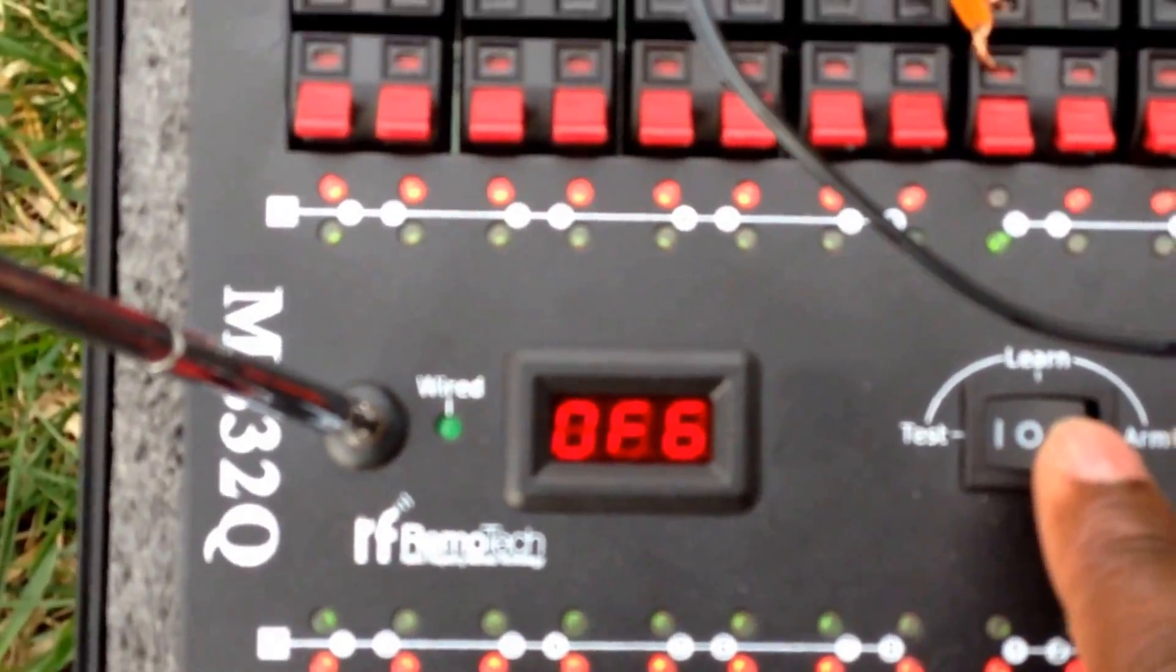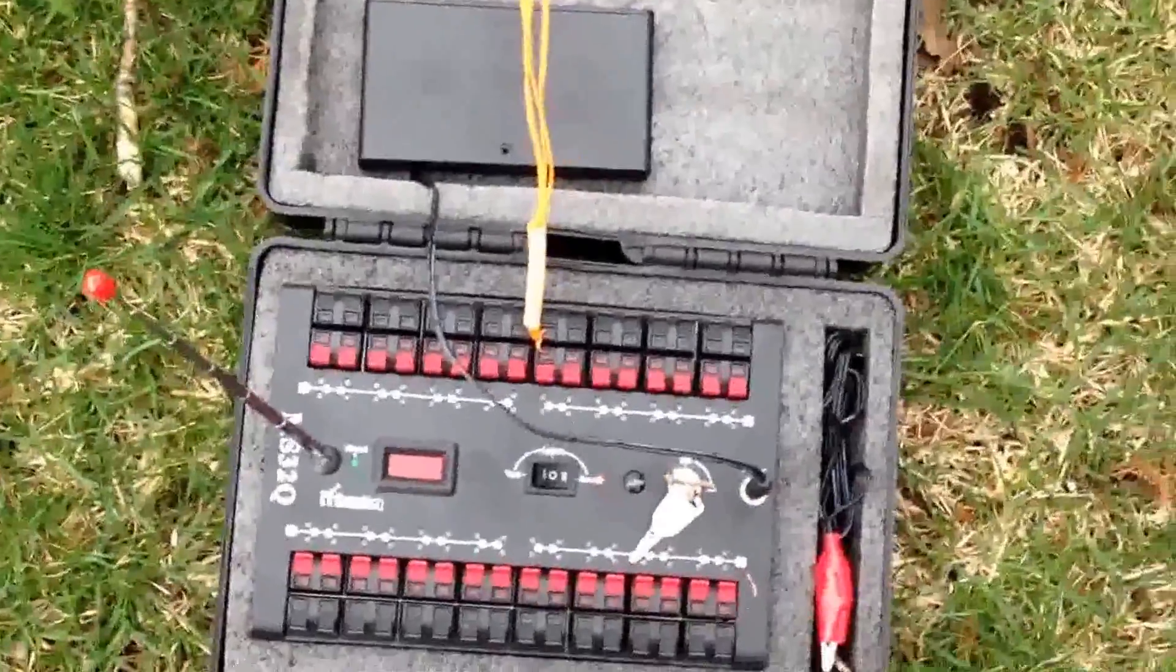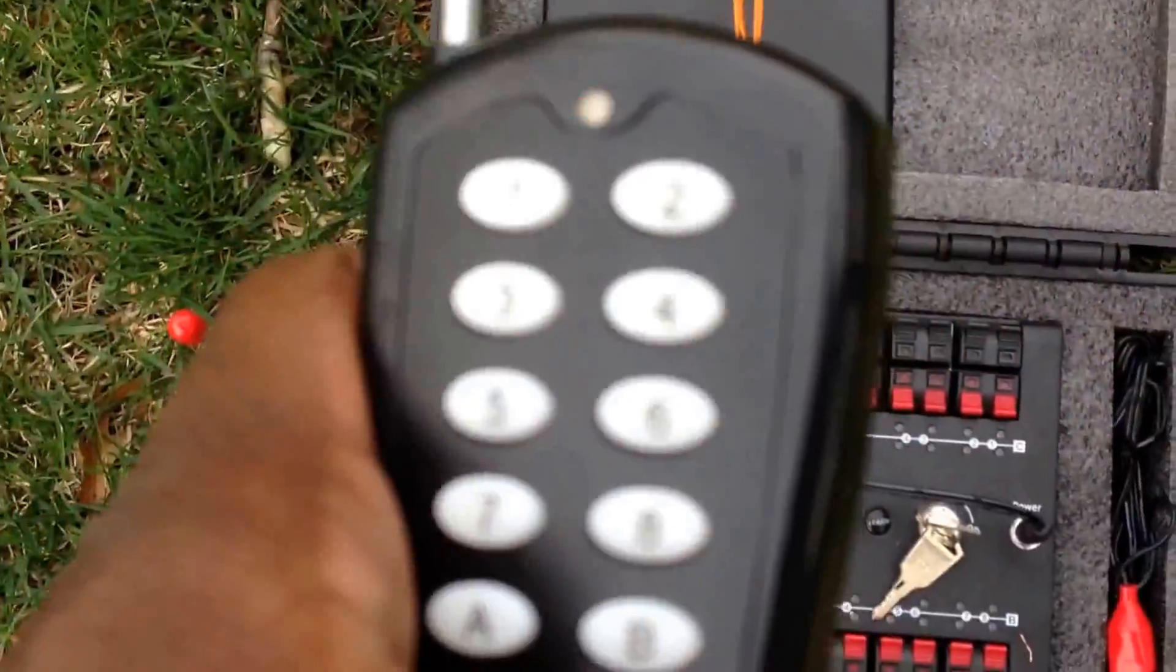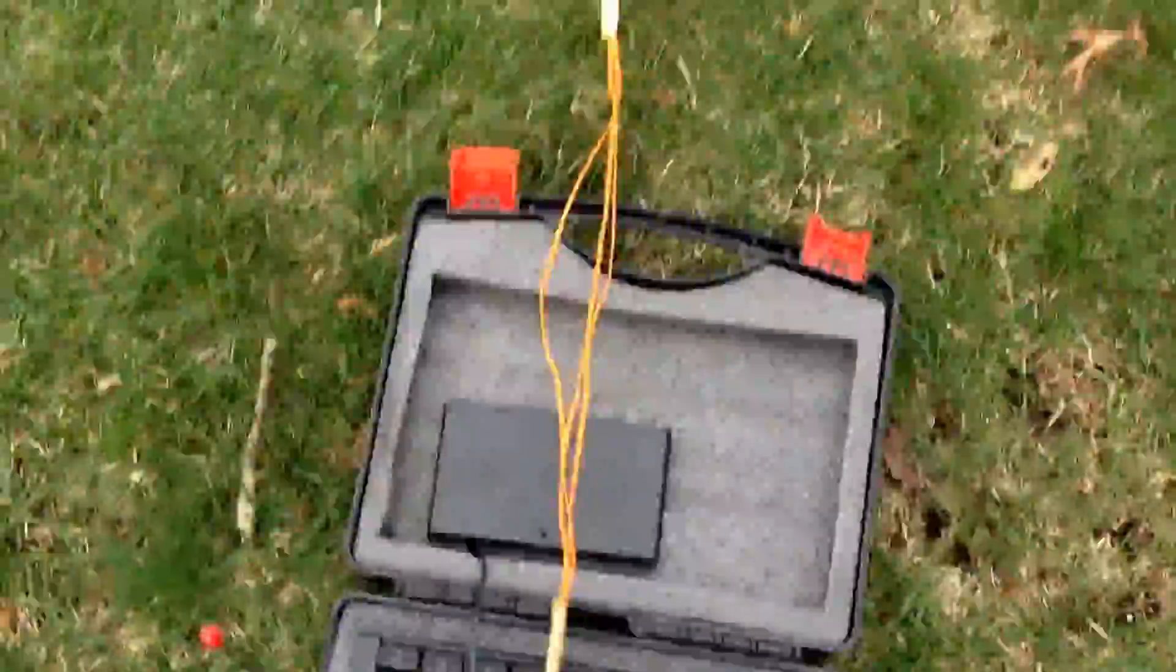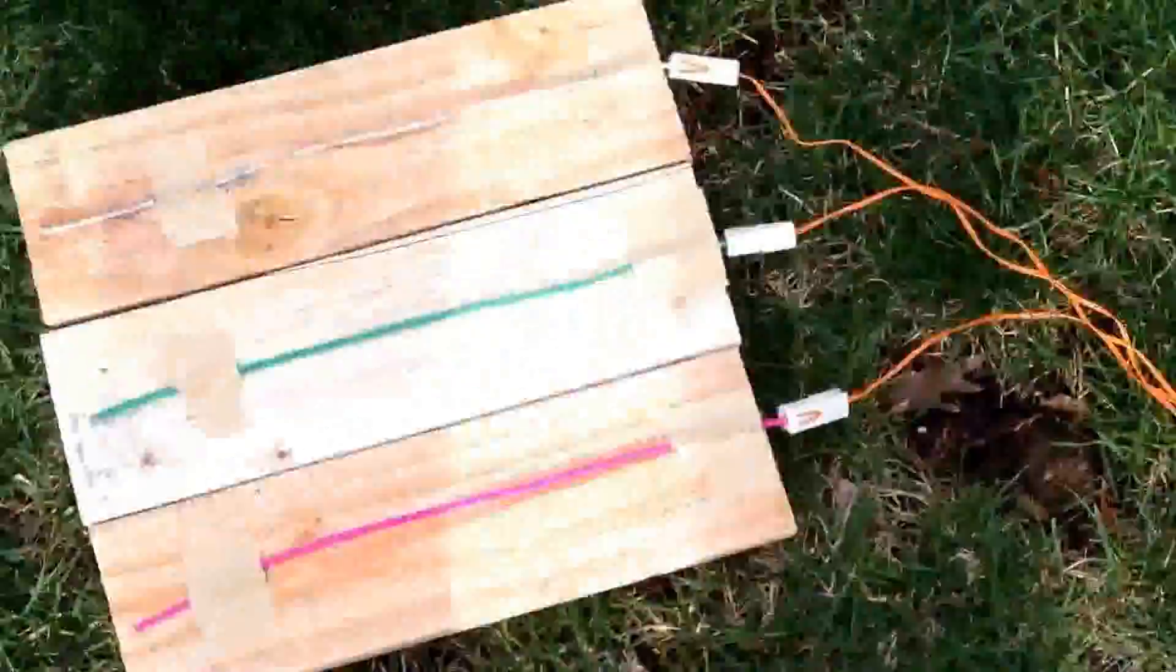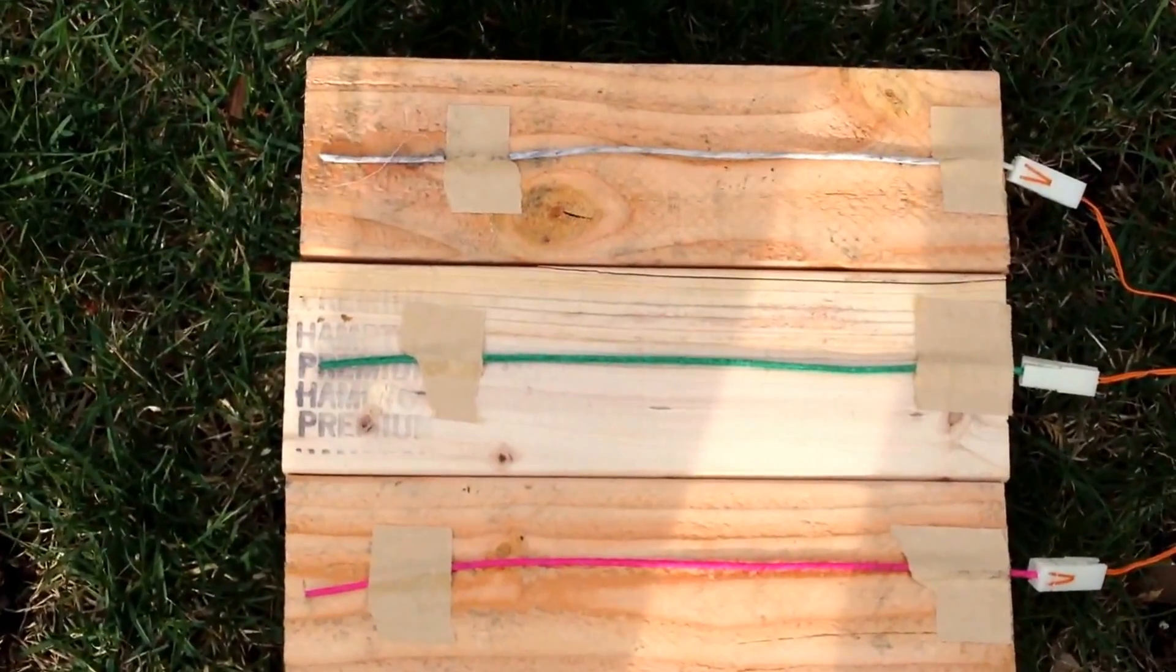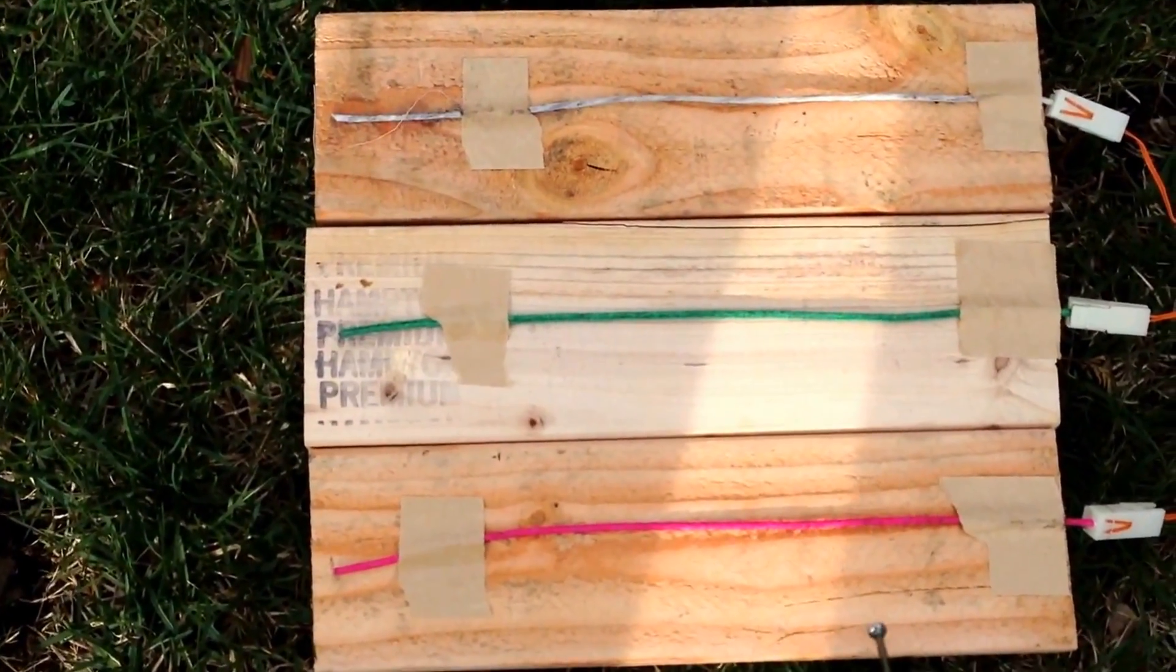Now I'm going to arm it. Pull out the remote, turn it on - that is cue C8. Let's see how this burns, let's see which one burns faster: Sky Bacon in the middle, pink visco, and your traditional quick fuse. Here we go.